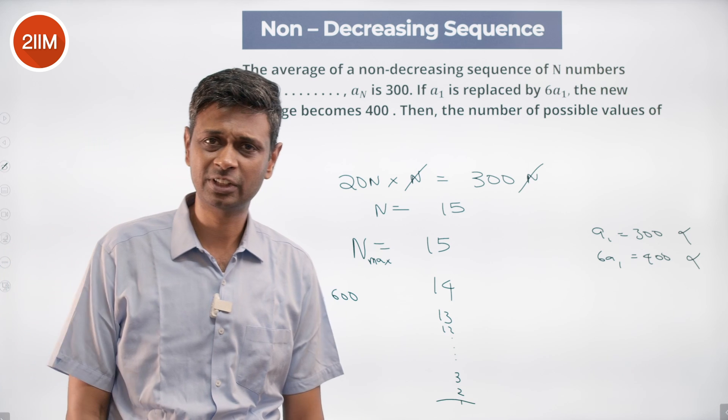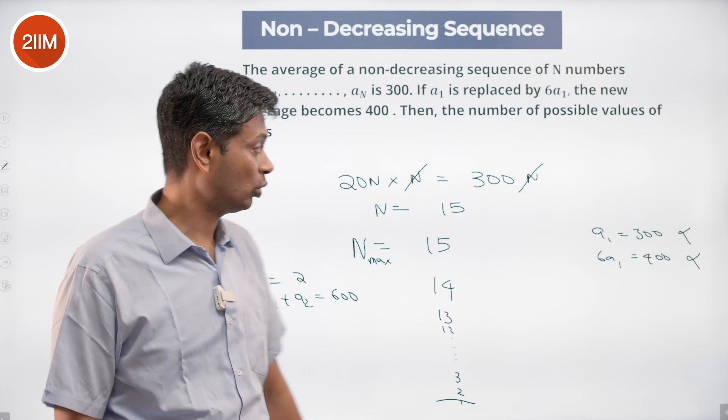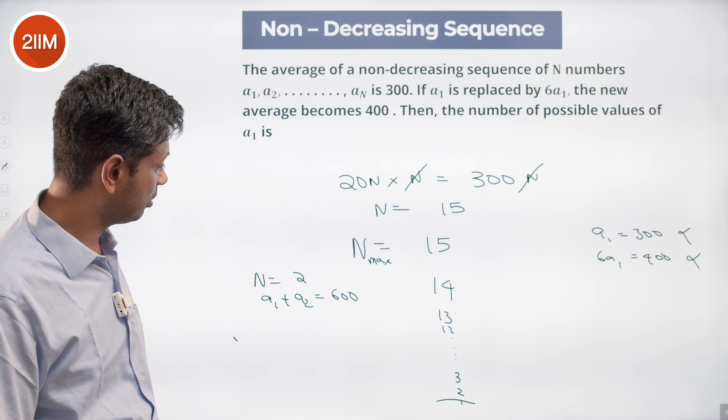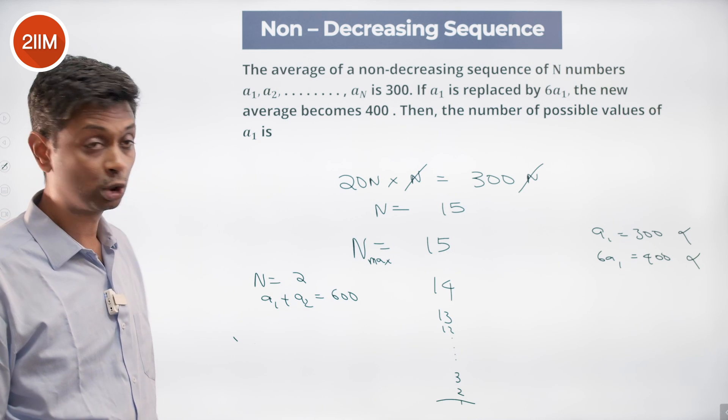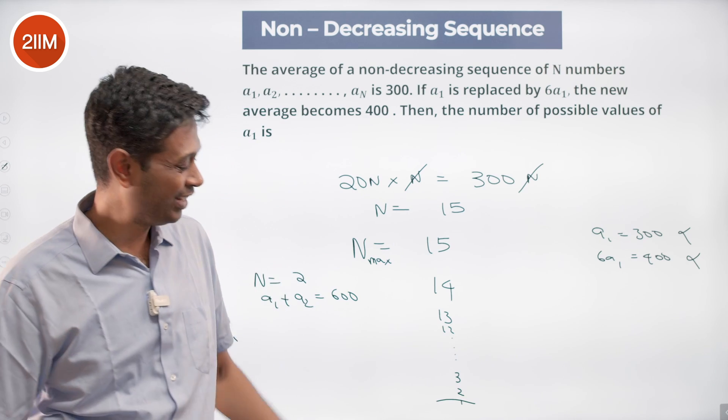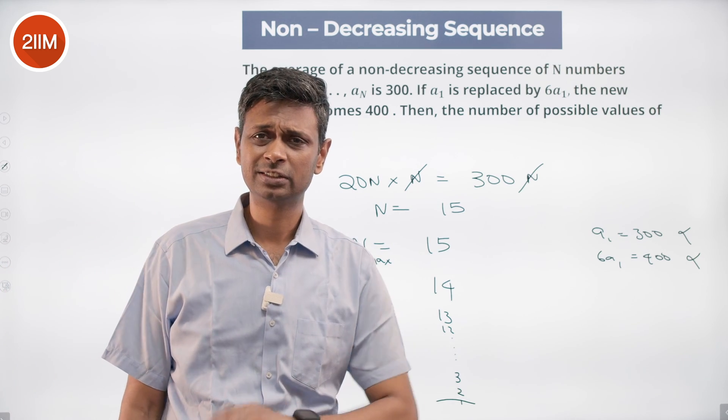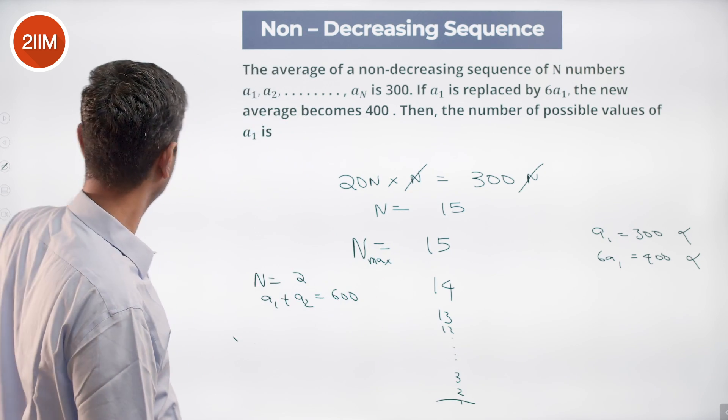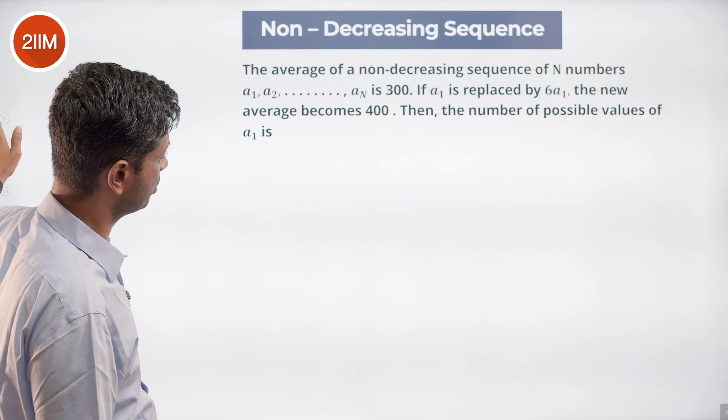This can work, so a₁ + a₂ being 600, N = 2 will work. From 15 all the way till 2 will work - 14 different values. N = 1 will not work, so 14 different values. Absolutely beautiful question.